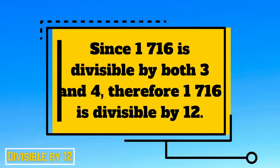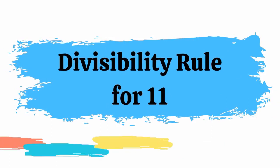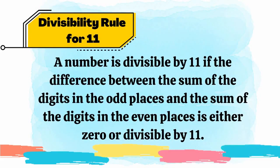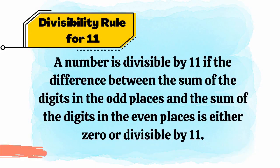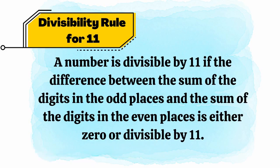And for our final rule, the Divisibility Rule for 11. A number is divisible by 11 if the difference between the sum of the digits in the odd places and the sum of the digits in the even places is either 0 or divisible by 11.